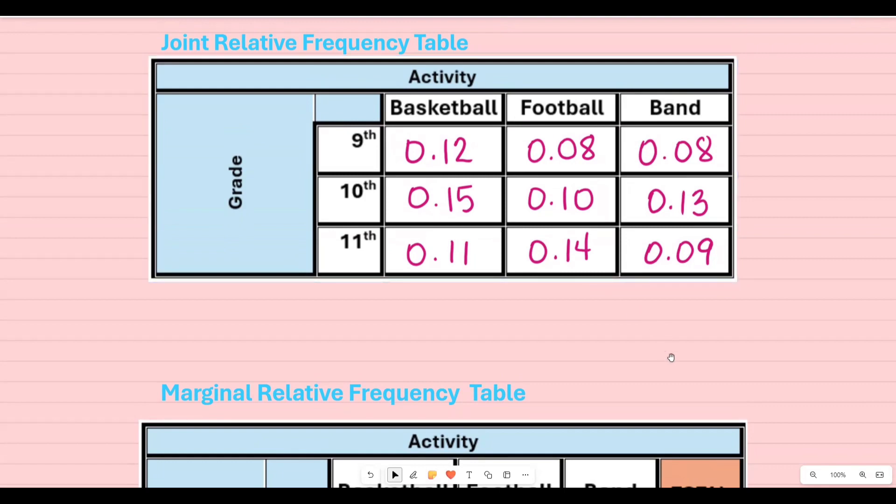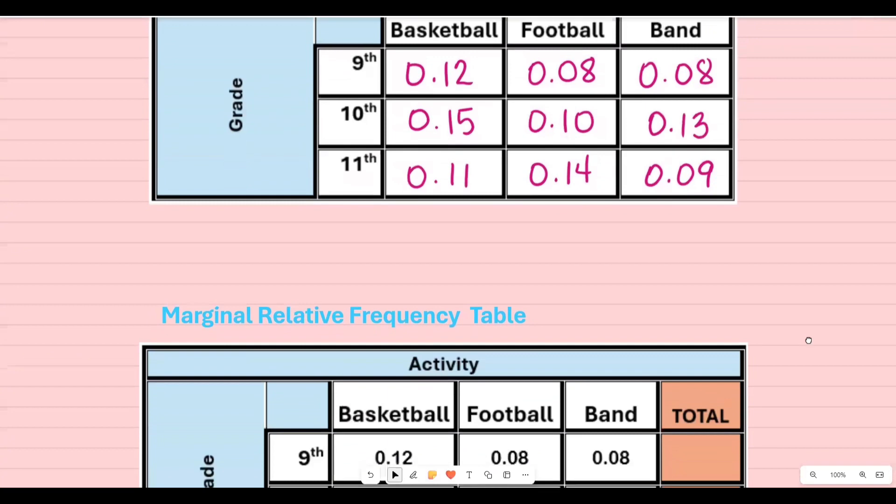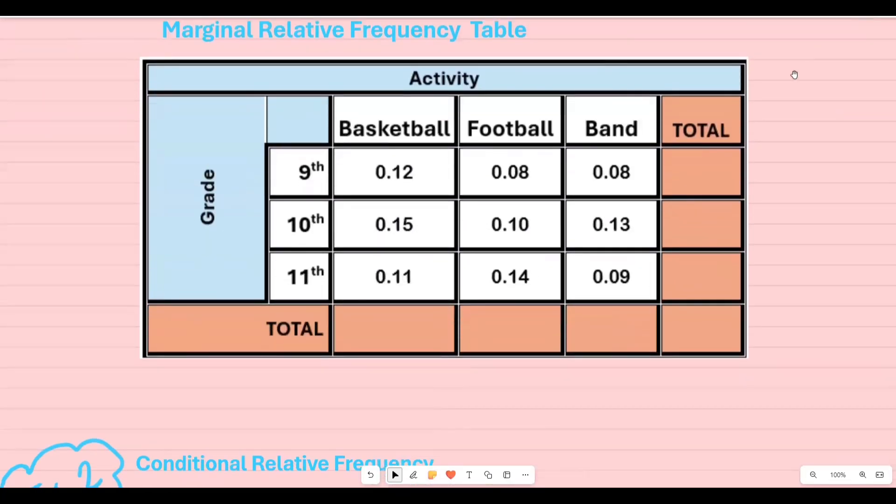The next step asked me to find the marginal relative frequency. So when I do that I now have to add the totals for each row as well as each column.